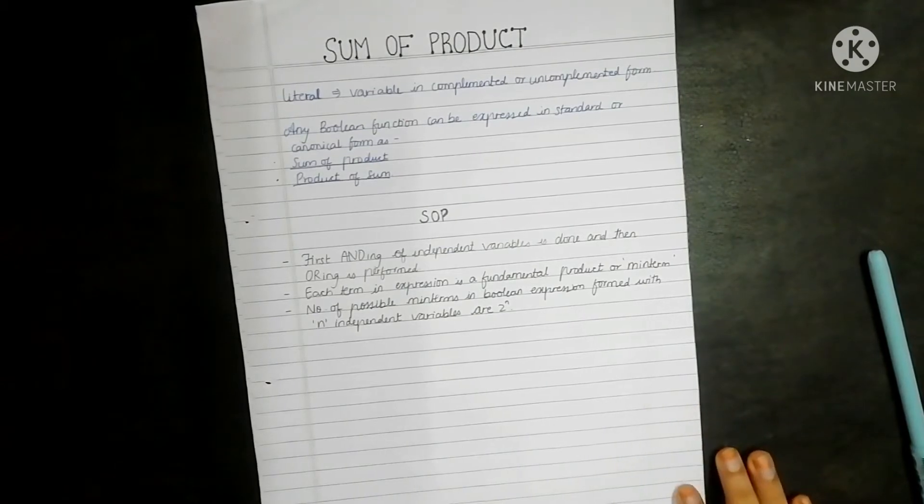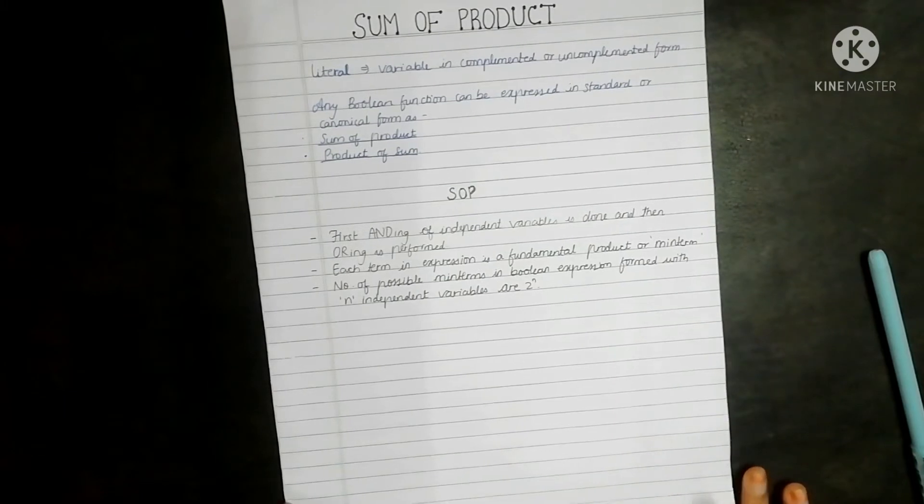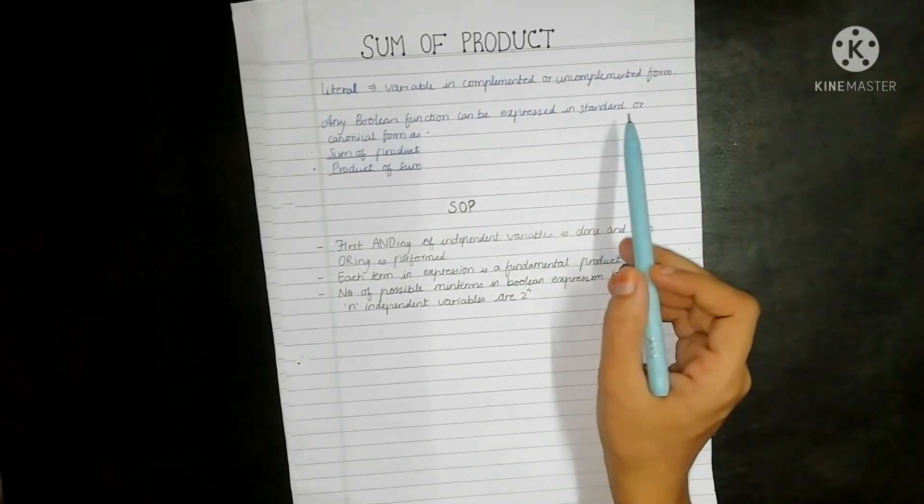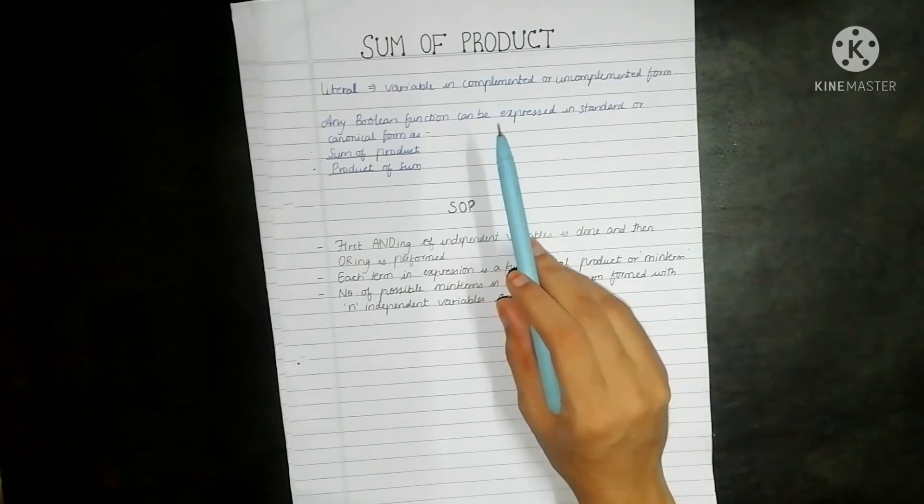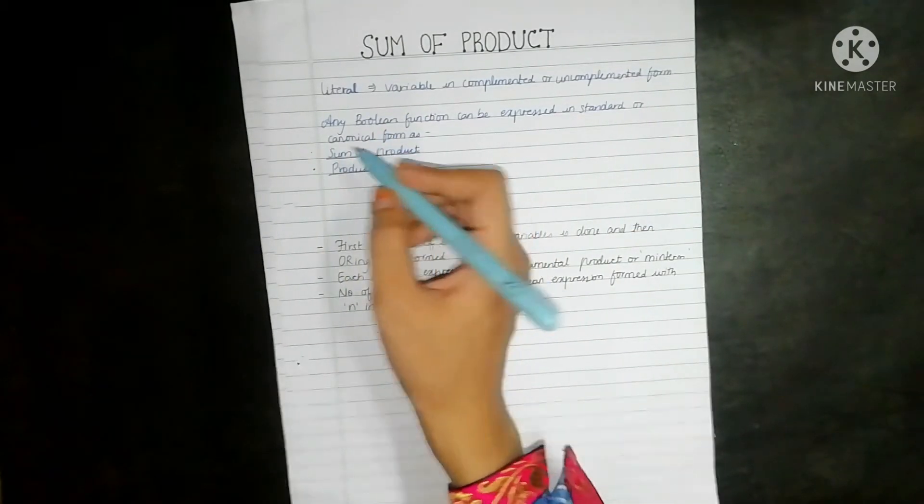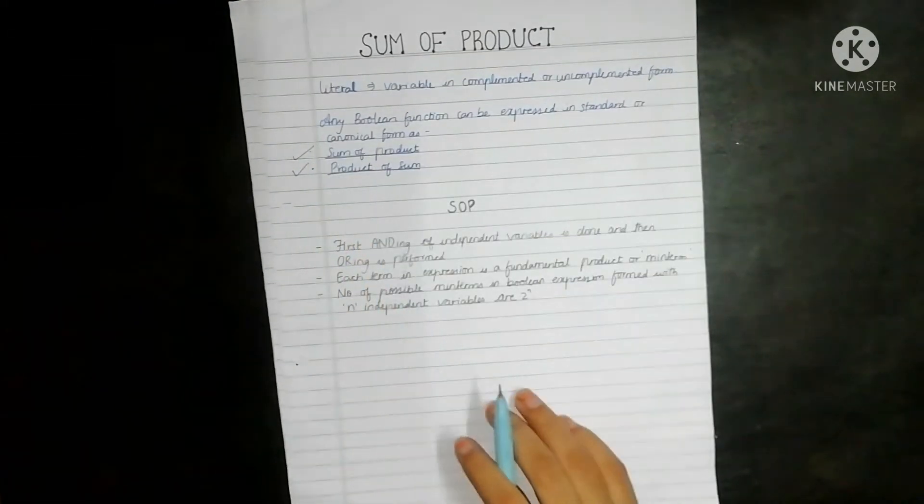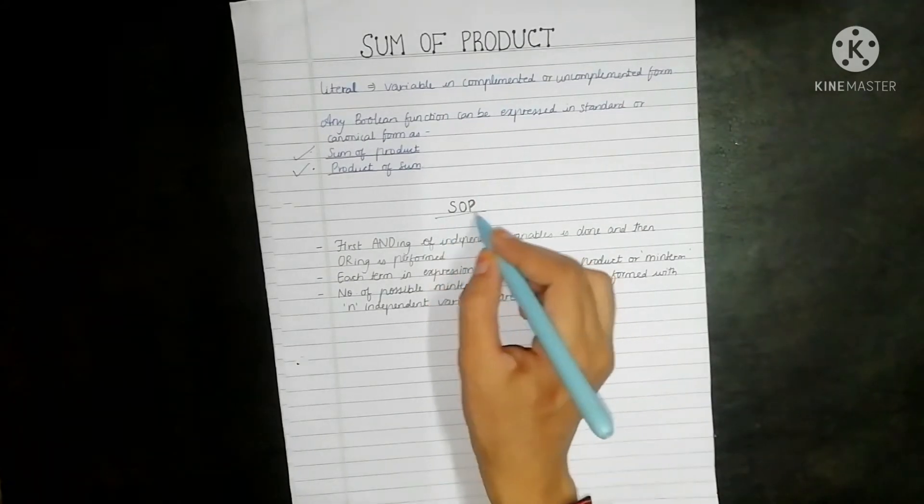We constructed the truth table for two, three and four variables, so that concept will help you in understanding the sum of product very easily. Let's begin with the sum of product. Any Boolean function can be expressed in standard or canonical form. It can be done using these two methods: either by sum of product or by the method of product of sum. In this video we will study the sum of product.